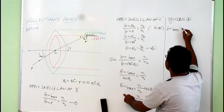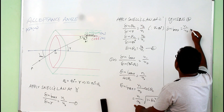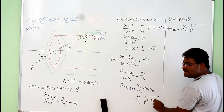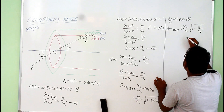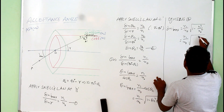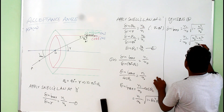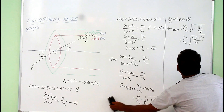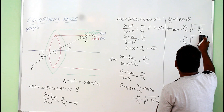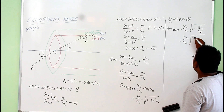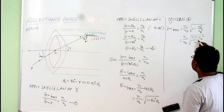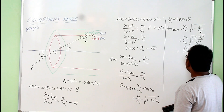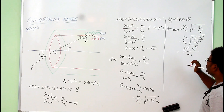Using equation 2, sine(theta_C) = N2 / N1, so sin²(theta_C) = N2² / N1². Substituting: sine(i_maximum) = (N1 / N0) × under root of (1 − N2²/N1²) = (N1 / N0) × under root of (N1² − N2²) / N1². Simplifying, we can cancel N1, giving: sine(i_maximum) = under root of (N1² − N2²) / N0.